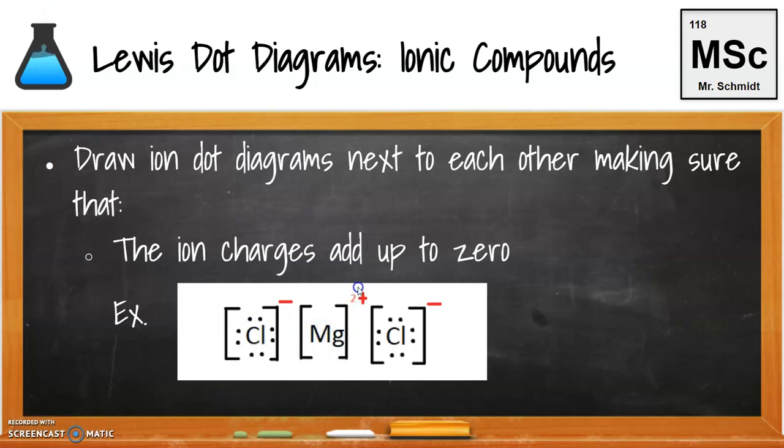Here we have a negative 1, another negative 1, so we're at negative 2. That means we've got to have a positive 2 to balance it out. These charges should all add up to zero.